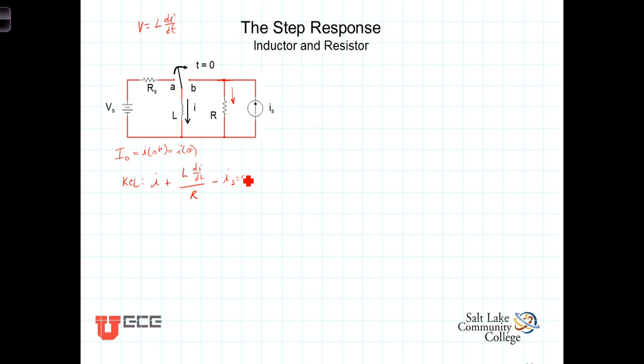Now, let's clean this up just a little bit. We're going to take the Is to the other side, and multiply both sides of the equation by R over L, so that we get then dI/dt plus R over L times I is equal to R over L times Is.